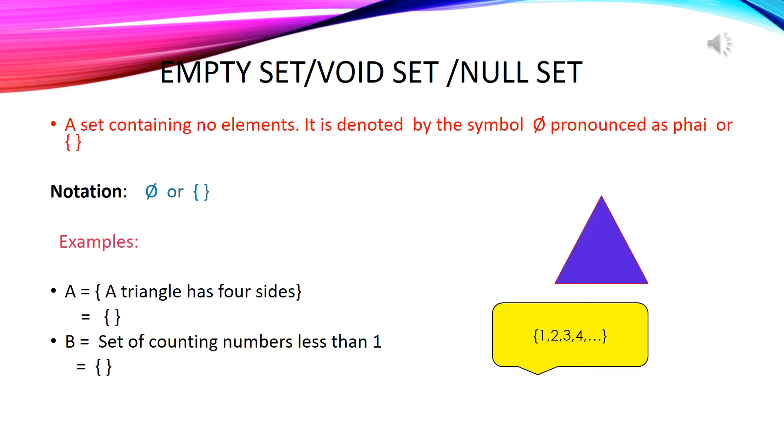For example, if we have a set of a triangle with four sides, can you guess how many elements are there in this set? Yes, no element is there. It's an empty set as we know that there are three sides in a triangle.